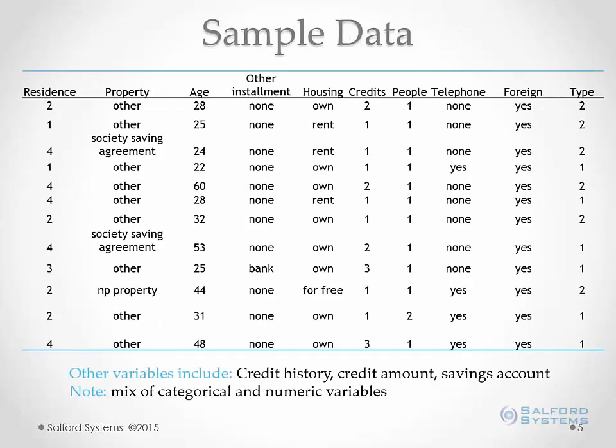This is a sample of what our data set looks like. There are 1,000 records and 20 characteristics. We have variables such as age of the customer, housing type, how many credit lines they have open, whether they have a telephone, whether they are a foreign worker. Other variables include credit history, credit amount, and savings account. There is a mix of categorical and numeric variables, but our software can handle both without recoding. There are also no missing values in this data set, but if there were, the software handles those as well.